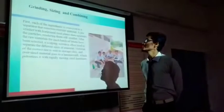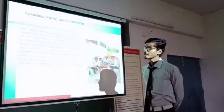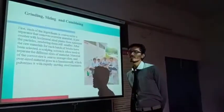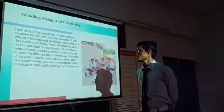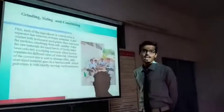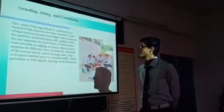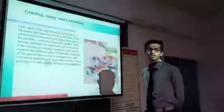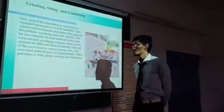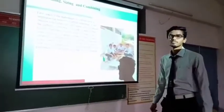Our first step is grinding, sizing and combining. First each of the ingredients are converted into a size that removes oversize material using horizontal steel plates. The raw material from each batch is selected according to size and sent to storage silos. Oversize material goes to the hammer mill which pulverizes with rapidly moving hammers.